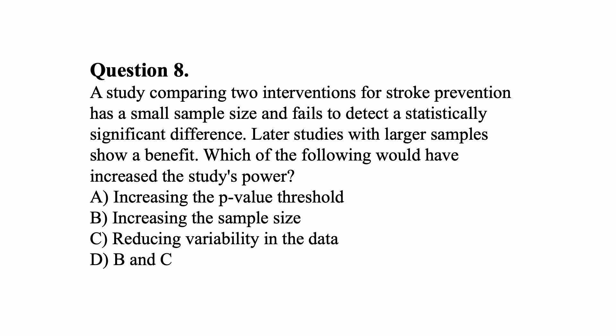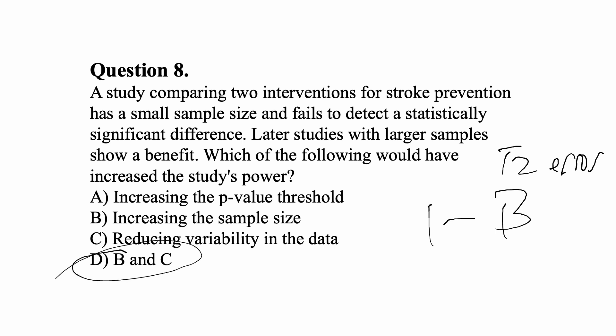Question eight: A study comparing two interventions for stroke prevention has a small sample size and fails to detect a statistically significant difference. Later studies with larger samples show a benefit. Which of the following would have increased the study's power? Remember that power is 1 minus beta, and beta is our type 2 error. Ways to increase power include increasing sample size, increasing the effect difference between groups, or reducing variability in the data. So D — both B and C — would be correct, though the most common and effective way to increase power is increasing sample size.